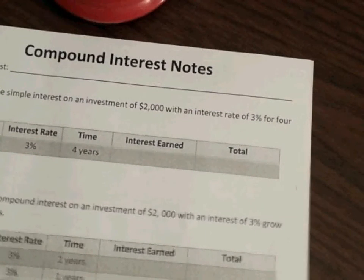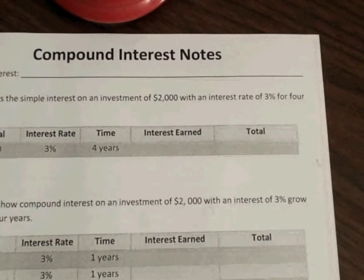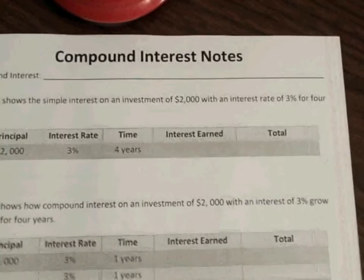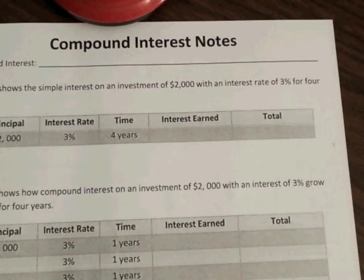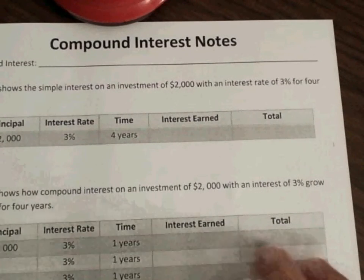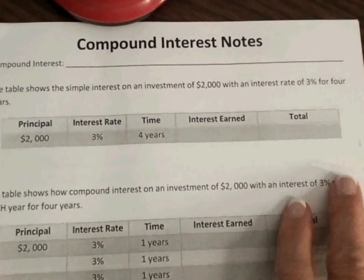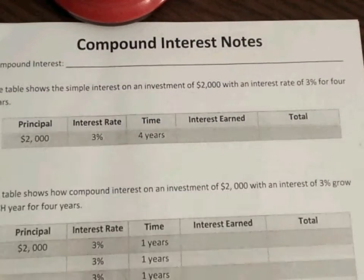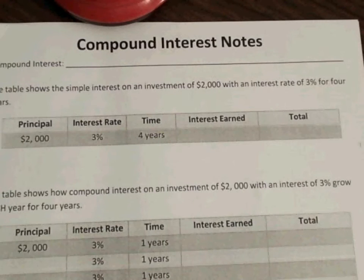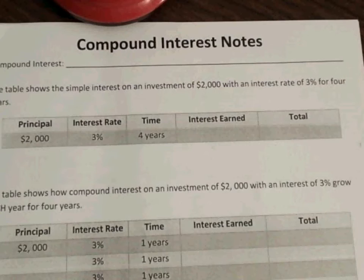Hello. We're doing compound interest now — it's Ms. Hall and Ms. Nelson. Compound interest, the definition of it, is interest that is computed on the latest balance, and that includes any previously earned interest that has been added to the original balance.